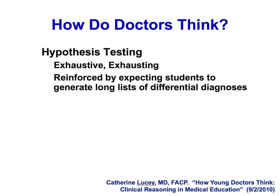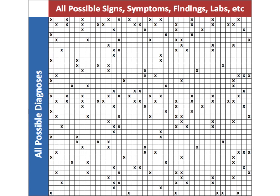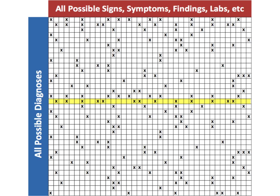The first way doctors think — and this is the way students are taught — is hypothesis testing. On one axis are all possible diagnoses, and on the other are all possible signs, symptoms, lab findings, etc. You gather exhaustive amounts of data, and then you go through and the diagnosis with the most matches wins. That's analytic thinking, that's hypothesis testing — simply finding the best match. We sometimes do that with a really unusual patient where nothing fits.